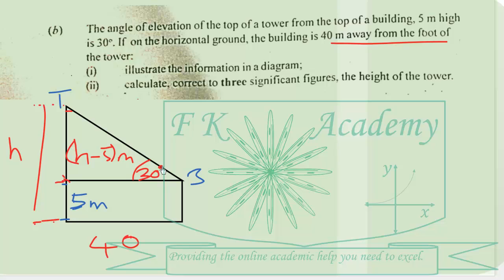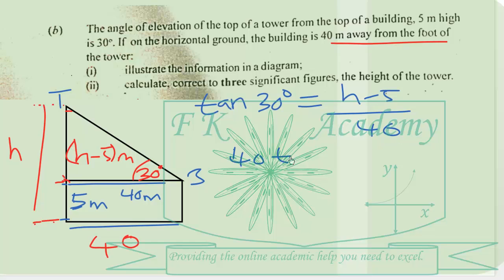So with this we can form an equation using the tangent ratio which will help us to solve for H. So we have tan 30 equals opposite over adjacent which is H minus 5 over 40. So we cross multiply. You multiply by 40.